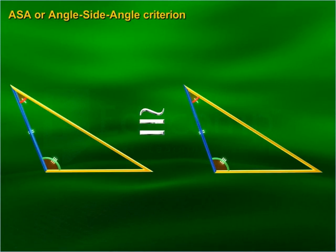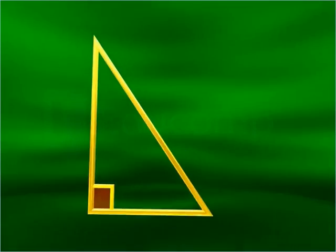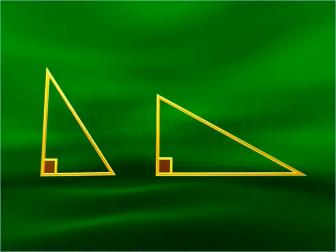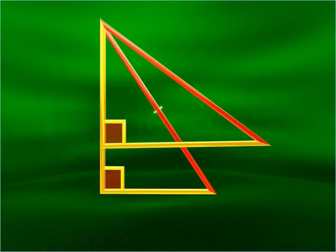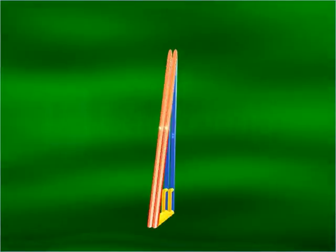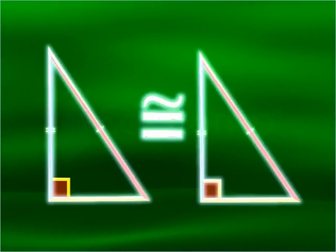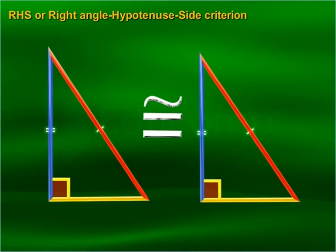ASA, or Angle-Side-Angle criterion: If two angles and the included side of one triangle are equal to two corresponding angles and the included side of another triangle, then the triangles are congruent.